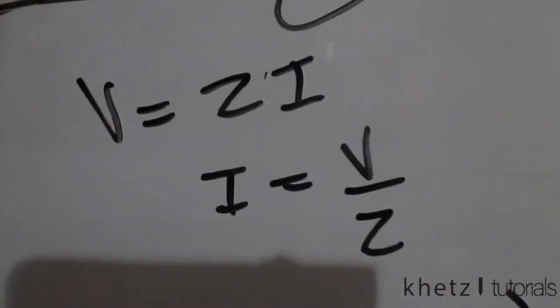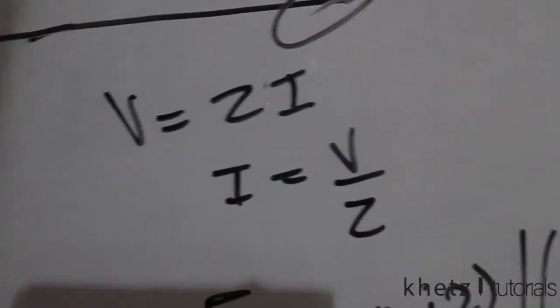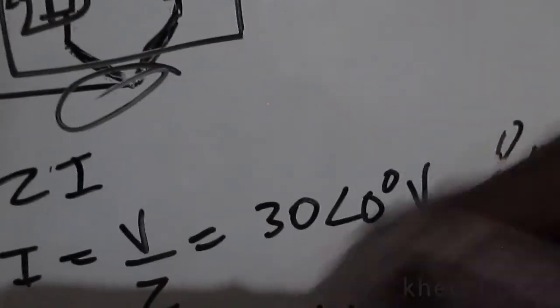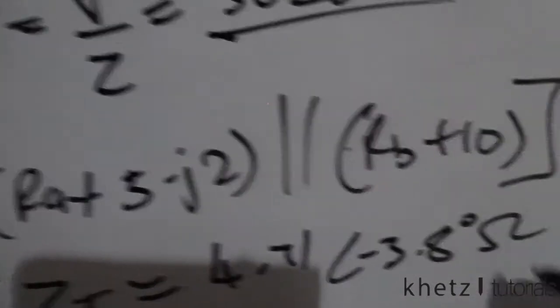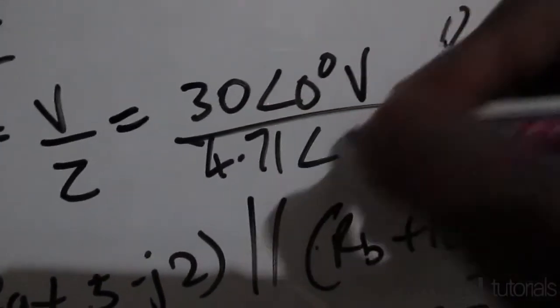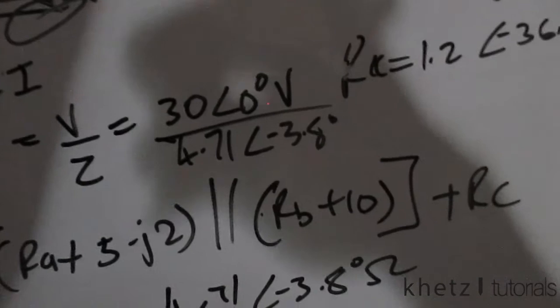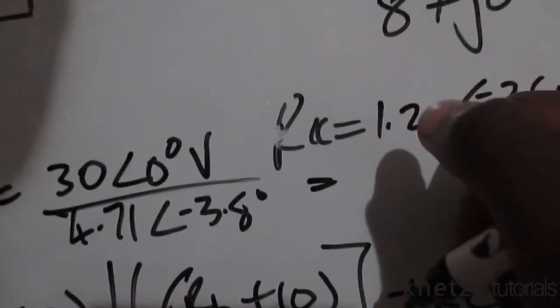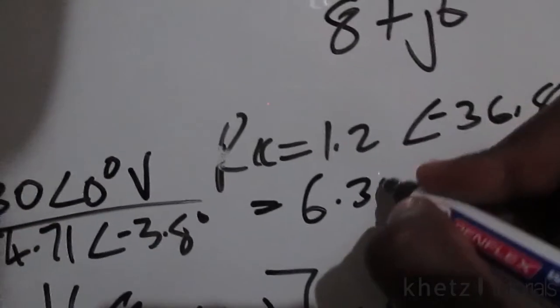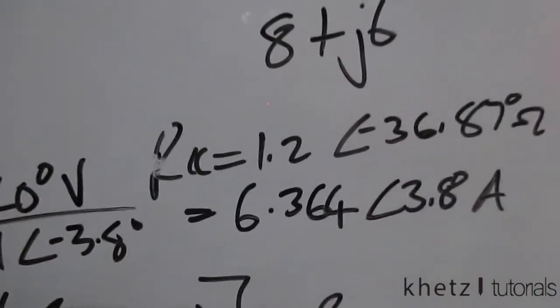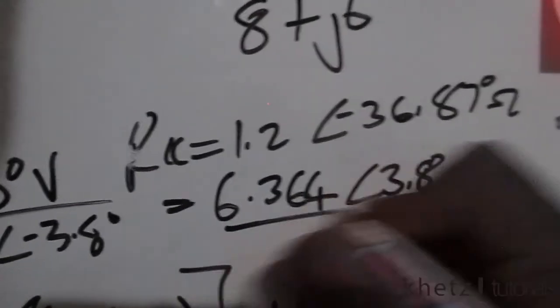Now we find our current I. I equals V divided by Z_T. V is given in the question as 30 at an angle of zero degrees, which is just the constant 30, divided by Z_T which we found to be 4.71 at an angle of negative 3.8 degrees. Punching this into your calculator, I equals 6.364 at an angle of 3.8 degrees.